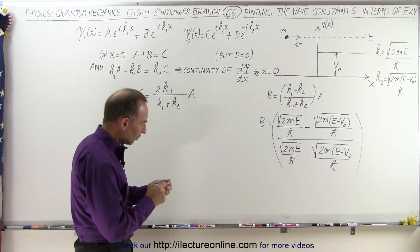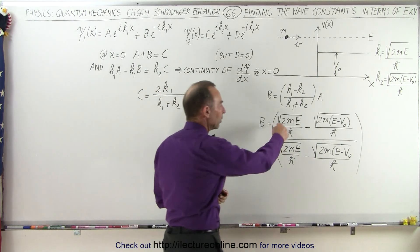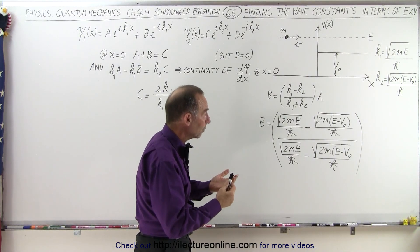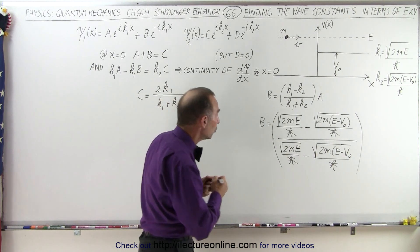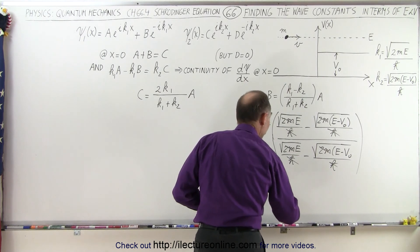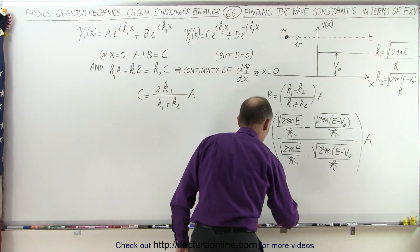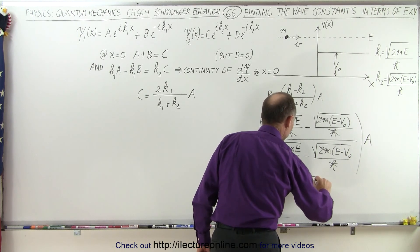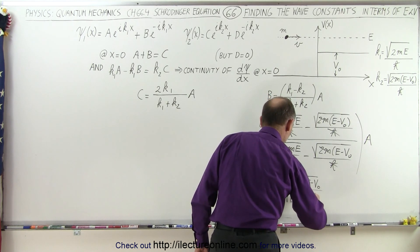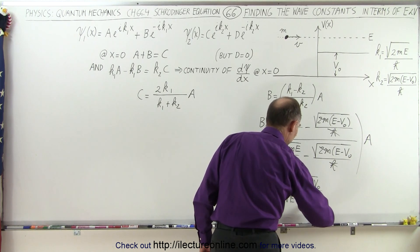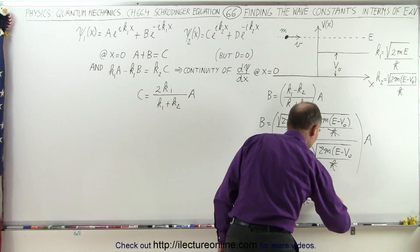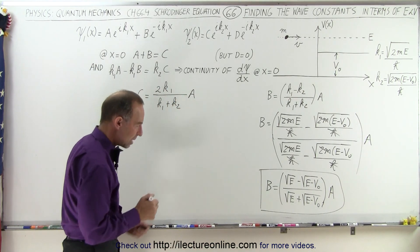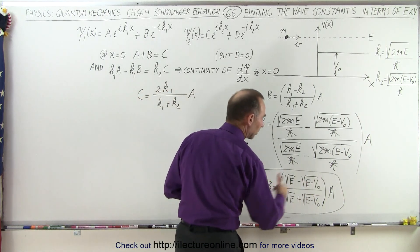How do we simplify that? Well, we realize that every term has an h-bar in the denominator, so we can cancel those. Next, we realize that every radical contains a 2m, and since it's multiplied, we can divide both the numerator and denominator by the square root of 2m, so those cancel as well. And so finally, we can say that b — and I can't forget my a — so b is equal to: in the numerator, the square root of E minus the square root of (E minus the potential of the barrier), and in the denominator, the square root of E minus the potential of the barrier, times a.